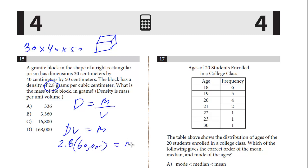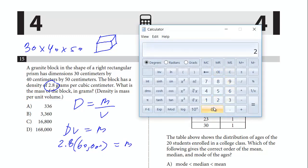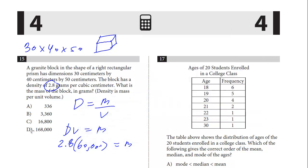This will give us the answer. I am going to use the calculator for this. 2.8 times 60,000. 168,000. And the answer is D.